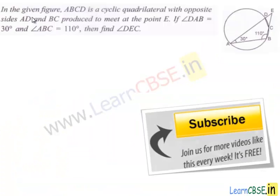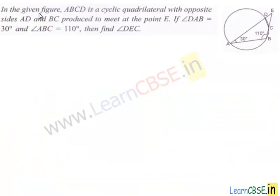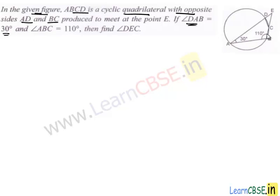Let's move to the next question. In this question, we are given a figure where ABCD is a cyclic quadrilateral with opposite sides AD and BC produced to meet at a point E. We are given that angle DAB is 30 degrees and angle ABC is 110 degrees, and we are supposed to find angle DEC.